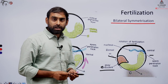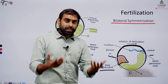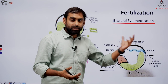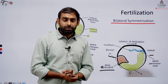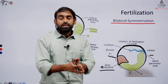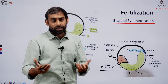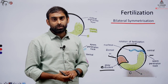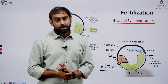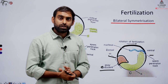After grey crescent formation, what happens next is further development. Of course there will be events like cleavage, then blastulation forming a blastula, then gastrulation, and after gastrulation, organ development — and that is how the complete frog develops. We will see this after a short break.